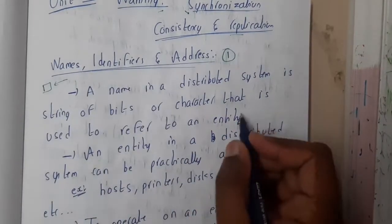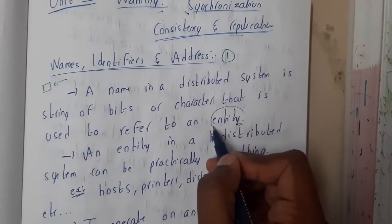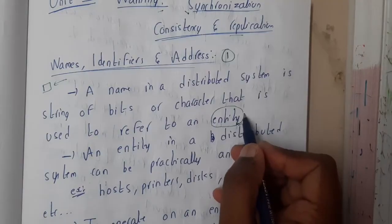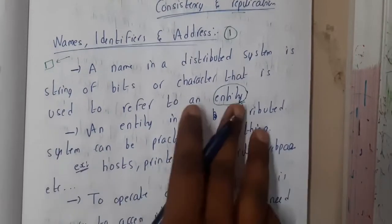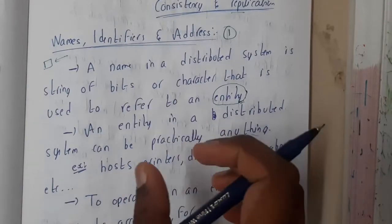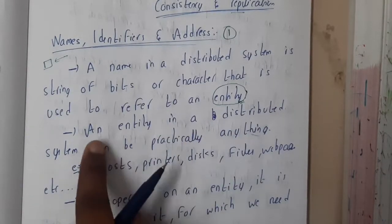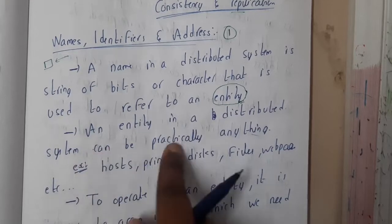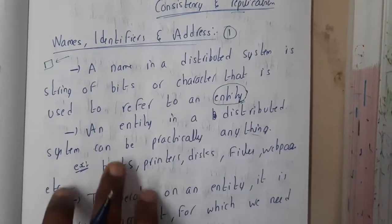So your question will be, okay, now what is this entity? Now you are saying entity, entity. So entity is something which has a particular task. Okay, so I'll be just explaining, don't worry. So an entity in a distributed system can be practically anything.